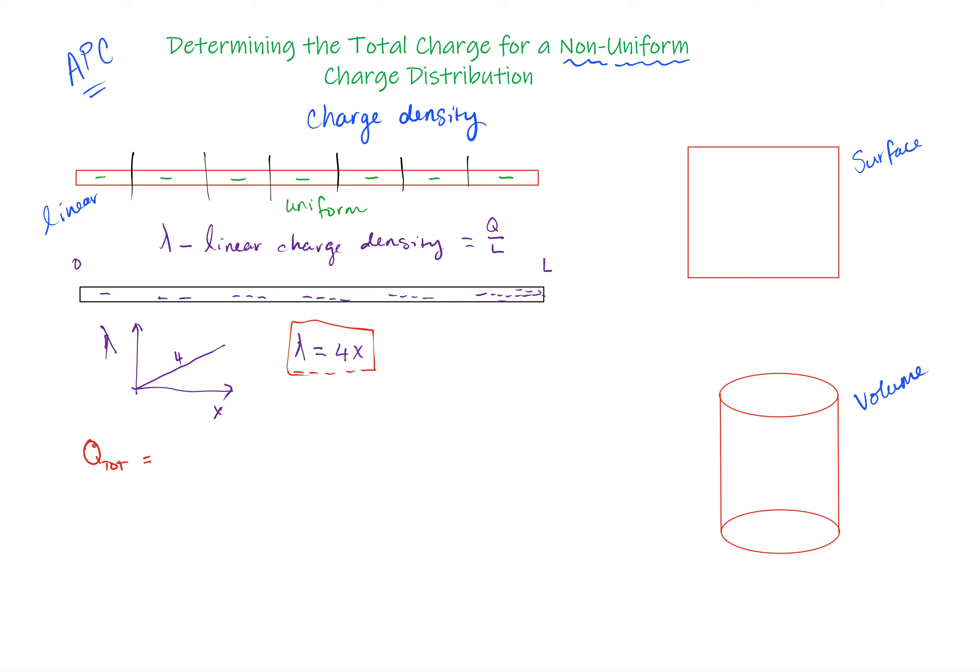Because in order to figure out the total charge on a uniform shape, all I need to do is take the charge density, which is just a number, and multiply it by the length of the rod, and I will know the total charge. And that just comes from this definition. Now a side note, the units for the linear charge density would be the Coulomb per meter. And then here of course we'd have the Coulomb per square meter, and here the Coulomb per cubic meter.